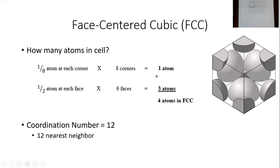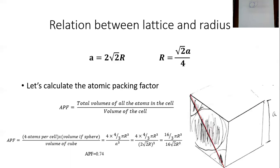There aren't actually four atoms in here — you add all the fractions up and it becomes four. Then you have the coordination number, which in math is also known as the kissing number. This talks about how many spheres each one sphere touches — how many spheres is it tangent to. It's going to touch 12 nearest neighbors. You can prove that mathematically, and we do see it in practice.